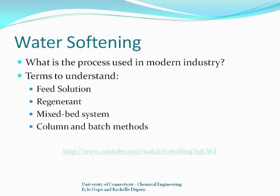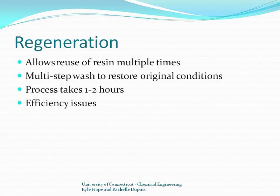However, this is very inefficient, and the prevalent technology uses a mixed bed column system where the feed solution passes through a series of separate cation and anion exchange beds. When it comes out at the end of the cycle, the feed solution is free of the unwanted ions and may even change in appearance, as seen in this YouTube video. Eventually, the resin reaches its exchange capacity and must go through the process of regeneration. Most systems utilize a computer system to determine when to start the regeneration process, which takes between one and two hours.